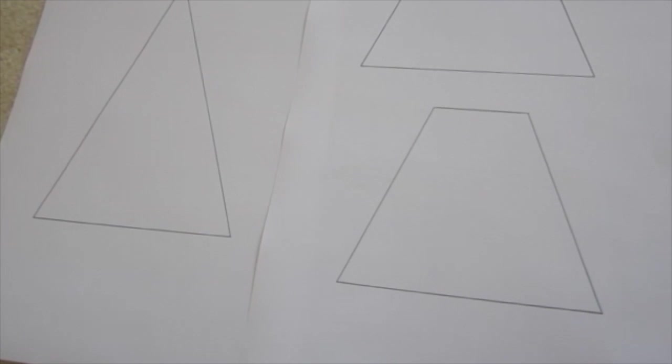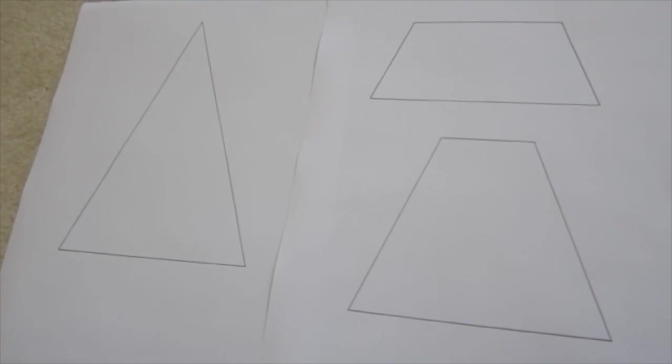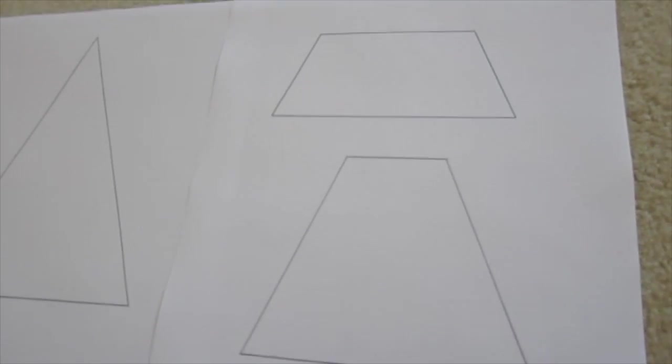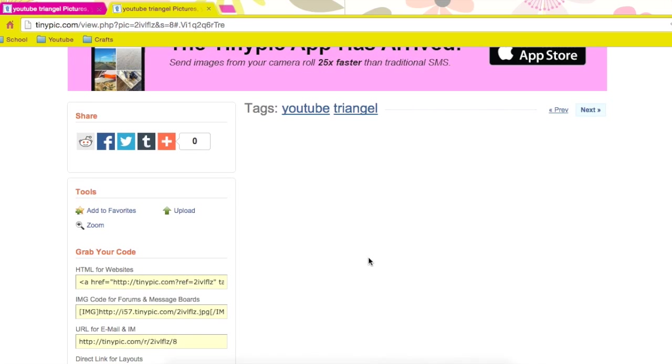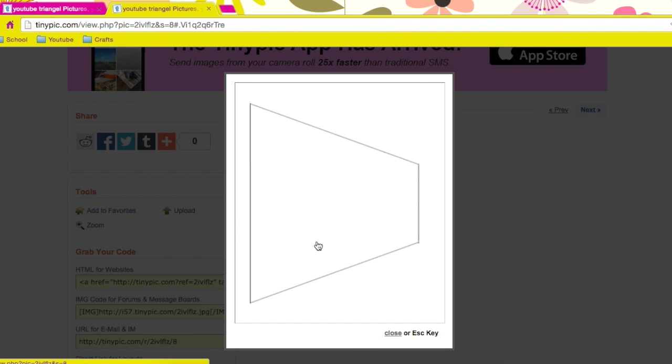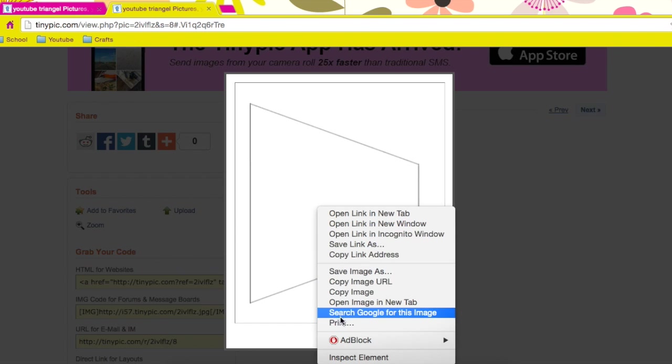You'll also need this template, which will be in the description box below. There are just a triangle and two trapezoids. If you click the link, sometimes it won't show up, but you just want to click the word 'zoom' - you can double click or right click and then click print.